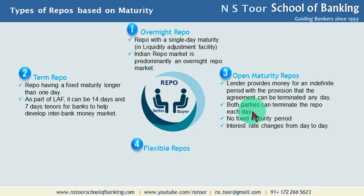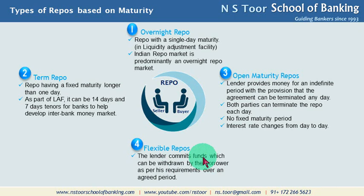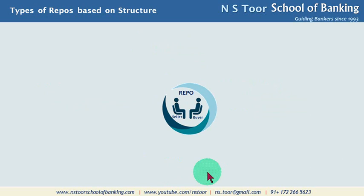The fourth type is flexible repo. In case of flexible repos, the lender commits funds which can be withdrawn by the borrower as per his requirement over an agreed period. This is similar to a cash credit loan, where funds are committed by the bank and can be withdrawn by the borrower according to his convenience. So in flexible repo also, the lender commits funds which the borrower can withdraw according to his requirement over a time period. These are the four types of repos based on maturity.